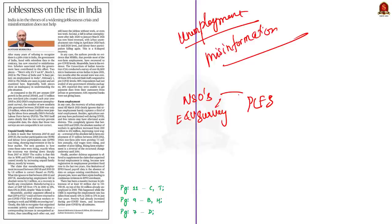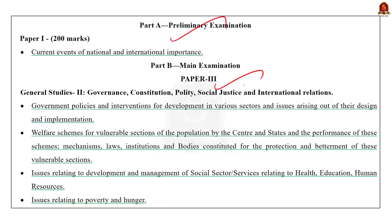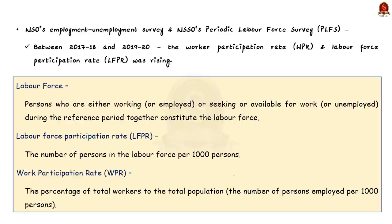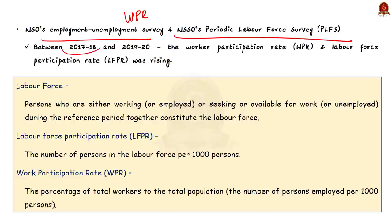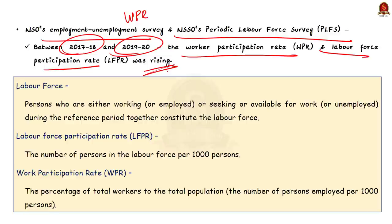The author talks about the worker population ratio and labour force participation rate. Both the NSO's Employment Unemployment Survey and NSO's Periodic Labour Force Survey claimed that between 2017-18 and 2019-20, the worker participation rate and the labour force participation rate were rising, showing improvement in the labour market. Let us understand these two terms. Persons who are either working or seeking or available for work during the reference period together constitute the labour force.